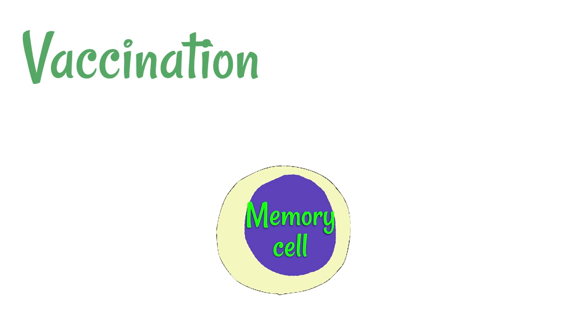Now, vaccinations. If we want someone to be immune to something, they need to have the memory cells produced. Well, let's imagine we could provide those memory cells before a person gets sick.